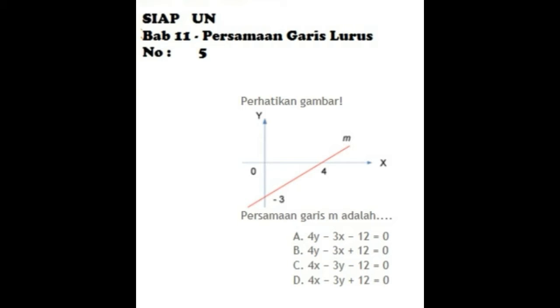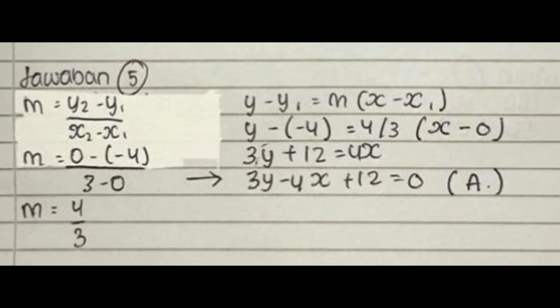Problem 5: Find the equation of line M. Solution: m = (y2 - y1)/(x2 - x1) = (0 - (-4))/(3 - 0) = 4/3. Using y - y1 = m(x - x1): y - (-4) = (4/3)(x - 0). 3y + 12 = 4x. Therefore, 3y - 4x + 12 = 0. The answer is A.